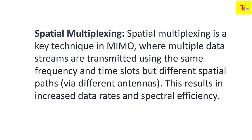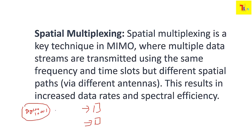Taking the example of spatial multiplexing — with two antennas, we are sending two different data streams. Our backend data is in binary format, ones and zeros. We send some data from the first antenna and some data from the second antenna. Spatial multiplexing means sending different data from different antennas.